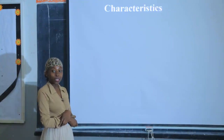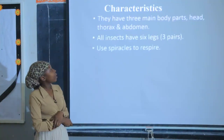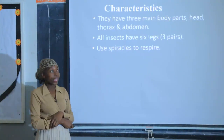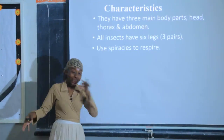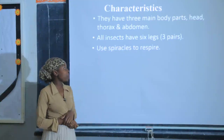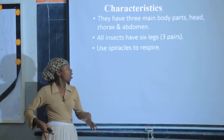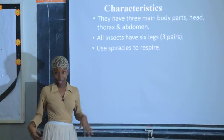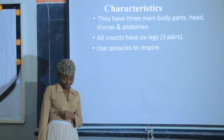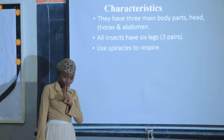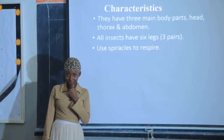We want to see the characteristics of insects — what do they have. They have three main body parts. Insects could be having so many other parts, but the main ones are three. Those are the head, the middle part called the thorax, and the abdomen — the lower part. Also, all insects have six legs.